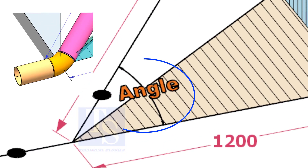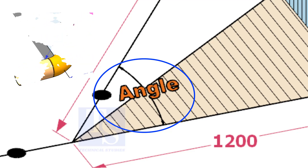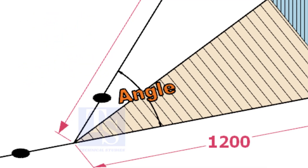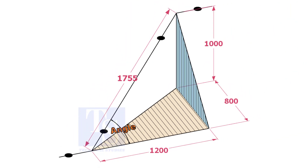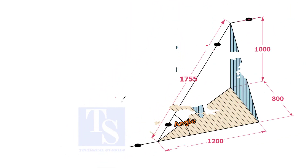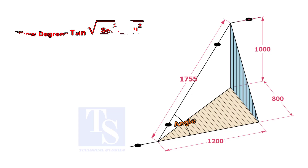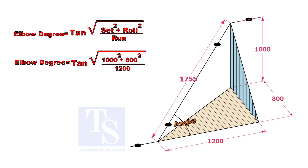Let us calculate the degree of the elbow or the including angle. The formula is the root of the set and the roll, divided by run, into tan inverse.